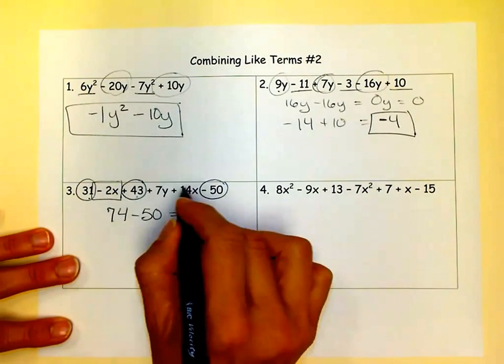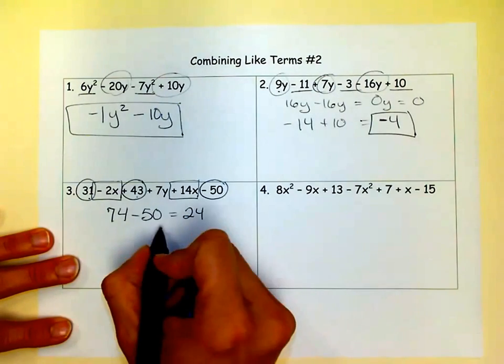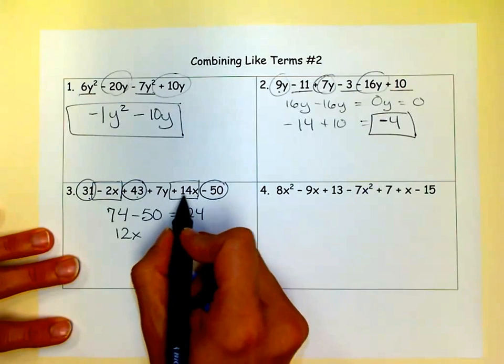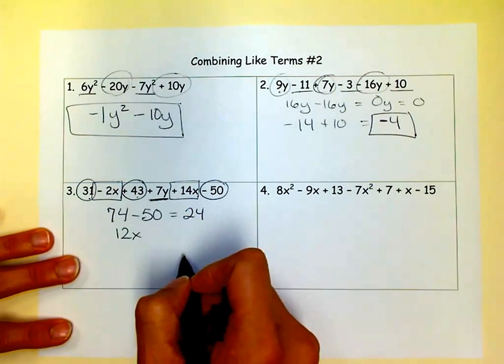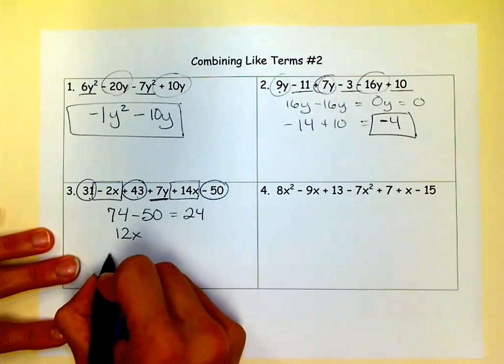And we're going to use our Xs. These two are our Xs. Negative 2 plus 14 is 12X. So negative 2. Or you could say it this way. 14X minus 2X is 12X. And then you'll see that this is the only Y. So there's nothing to combine it with, but we still have to include it.